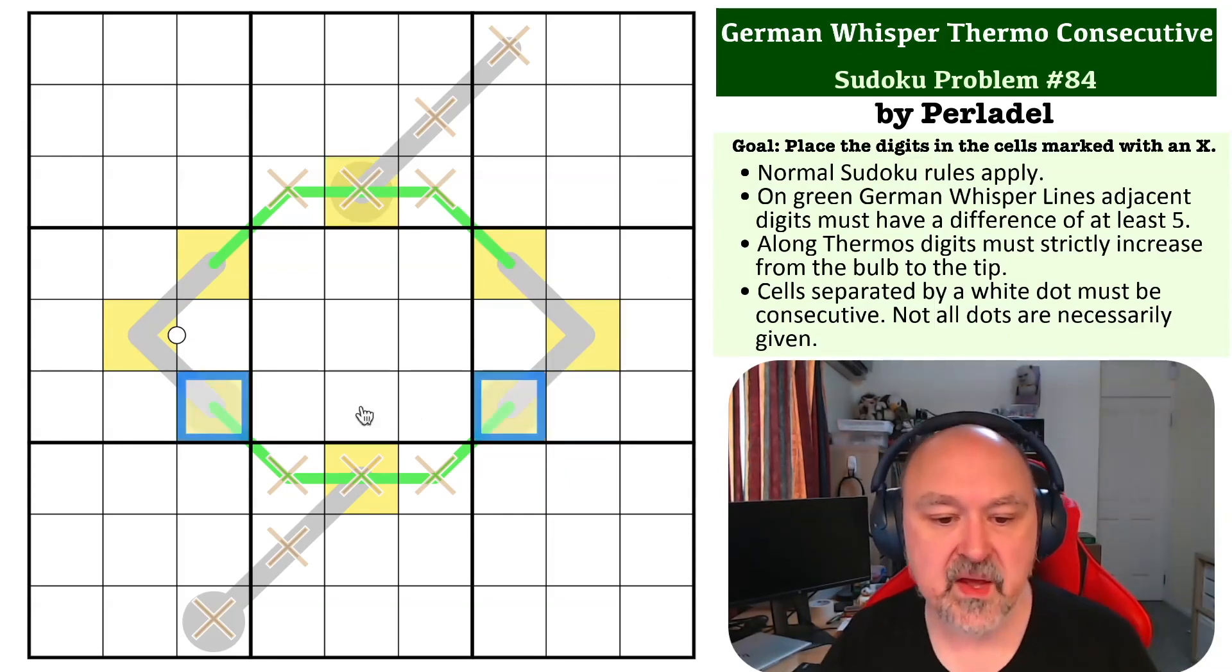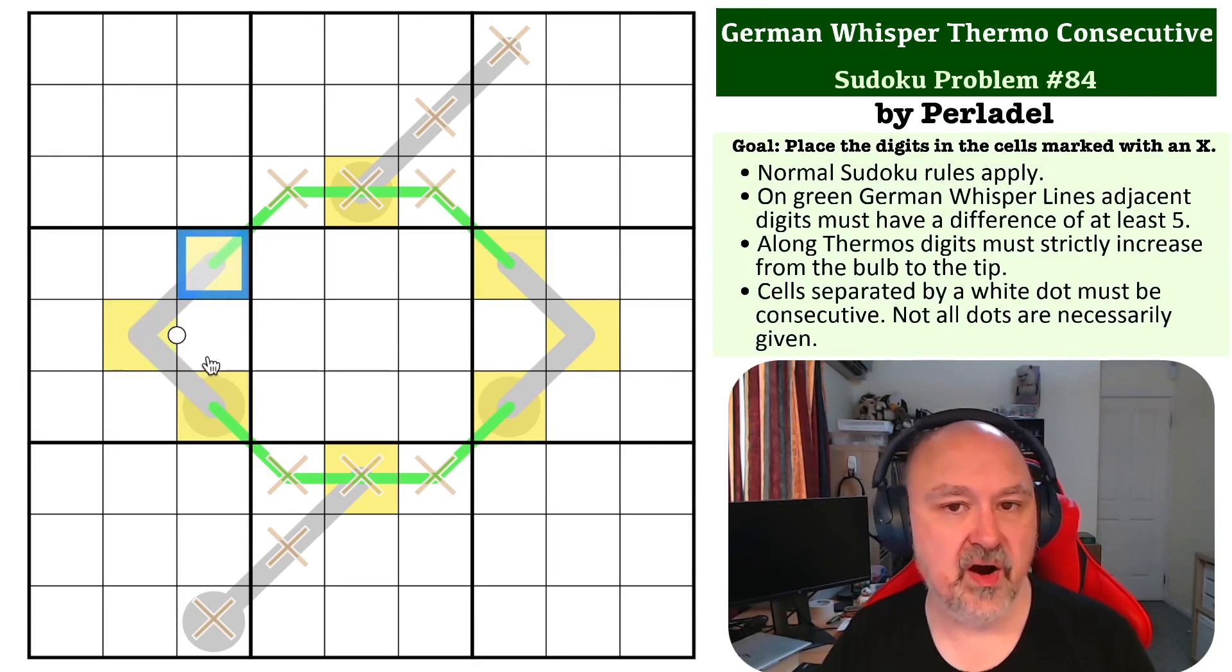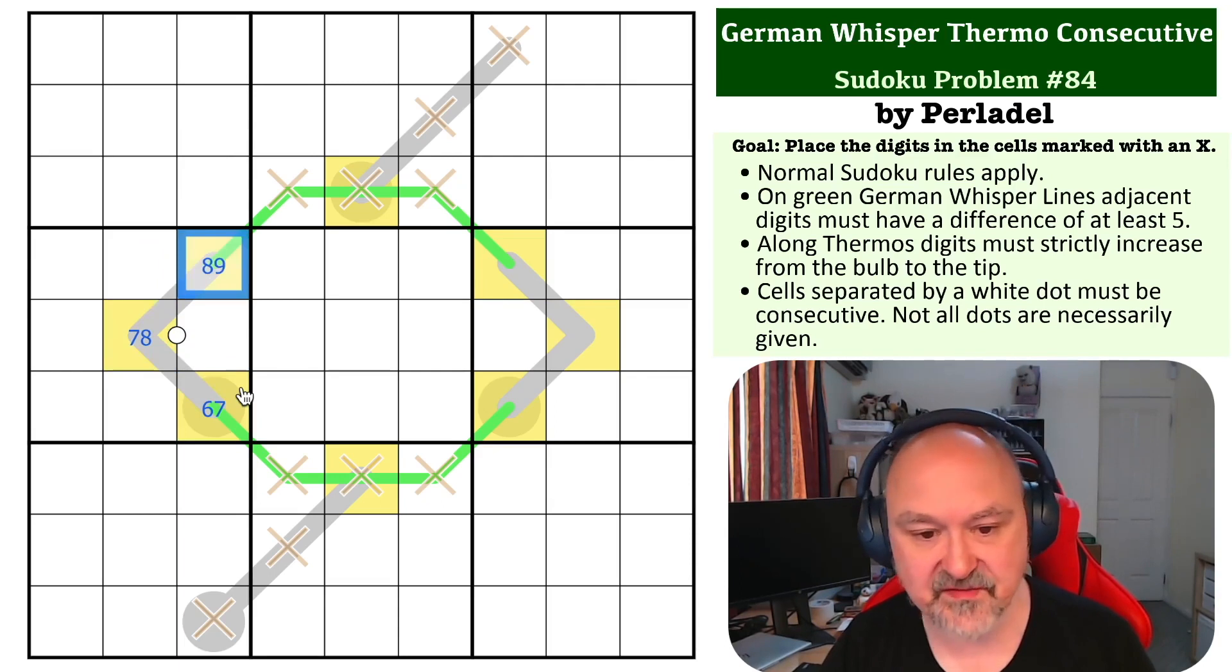If you think about these three-cell thermos, these have a maximum of nine, but you can't put nine into both of them, so one of these must be eight. And you've got these three-cell thermos that can only exist from high digits 6-7-8-9. So this would have to be six or seven, this would have to be seven or eight, and this would have to be eight or nine. But this is the same: 6-7, 7-8, and 8-9.